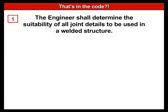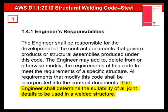Number one: the engineer shall determine the suitability of all joint details to be used in a welded structure. Where do you find that provision? It's in clause 1.4.1 of D1.1. This is an exact quotation out of the structural welding code, and highlighted in yellow we see the words that are essentially the first principle.